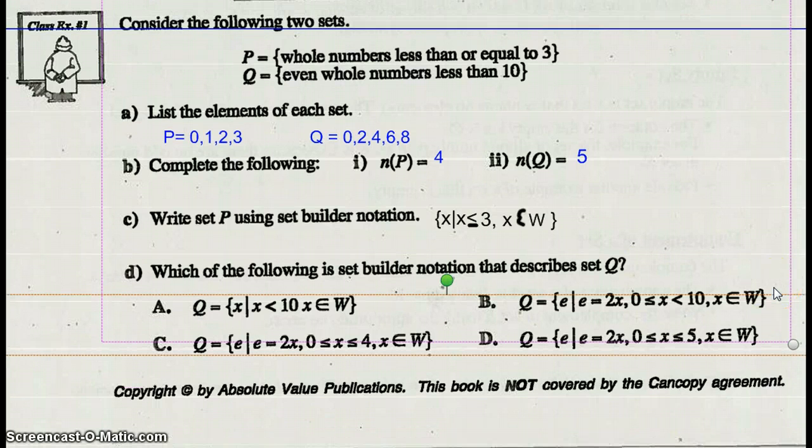Which of the following is set builder notation which describes set Q? X such that X is less than 10, element of the whole numbers? No, doesn't talk about even. E such that E is equal to 2X, where X is greater than or equal to 0 but less than 10, and an element of the whole numbers. If I pick the number 9, that's less than 10. 2 times 9 is 18. 18 is not a whole number less than 10. It can't be B.